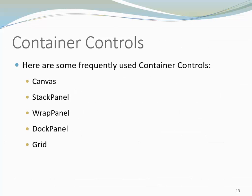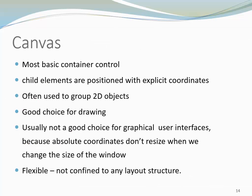Here are some frequently used container controls: Canvas, Stack Panel, Wrap Panel, Dock Panel, and Grid. Let's have a closer look at each of them. Canvas is the most basic container control. Its child elements are positioned with explicit coordinates. Canvas is often used to group two-dimensional objects. It is a good choice for drawing, but usually not a good choice for graphical user interfaces, because absolute coordinates don't resize when we change the size of the window.